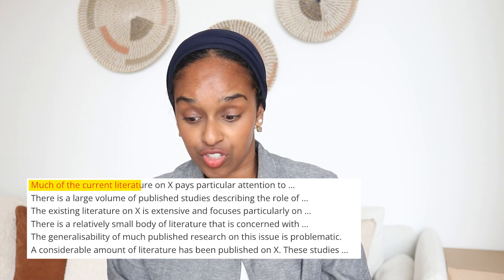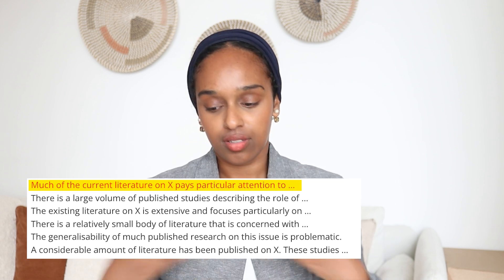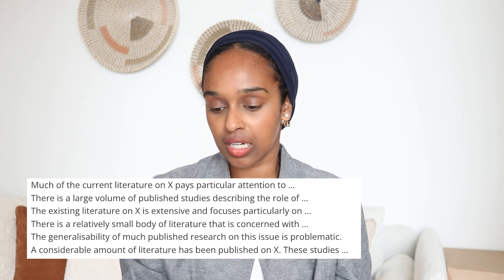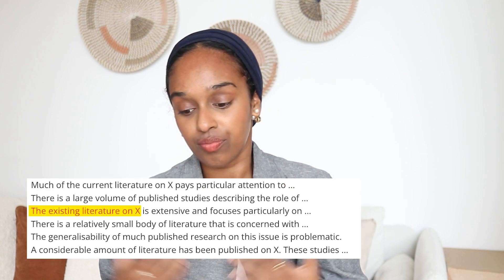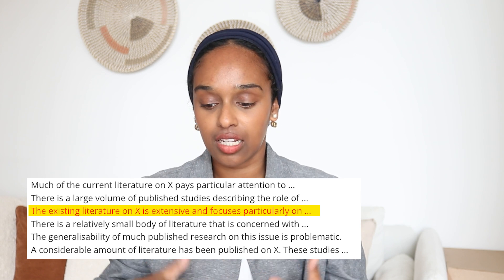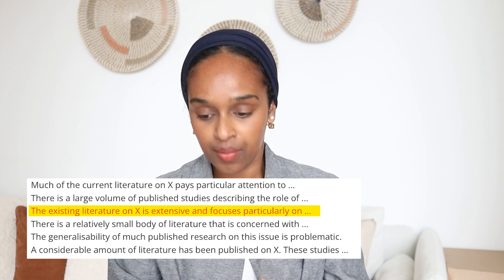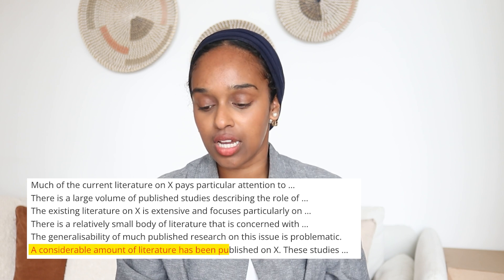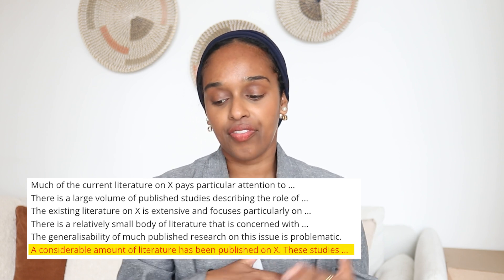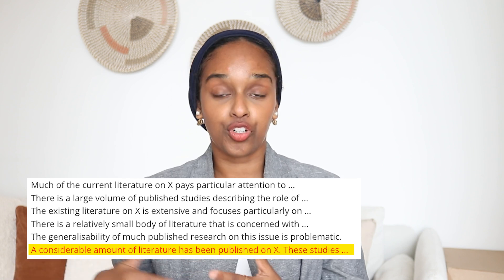This is usually at the beginning of your dissertation or review to introduce your reader and audience to your topic. Some ways to do this are by saying: 'Much of the current literature on X plays particular attention to...' or 'The existing literature on X is extensive and focuses particularly on...' or 'A considerable amount of literature has been published on X' — and then going into more detail. This introduces the topic and gives your audience background information.